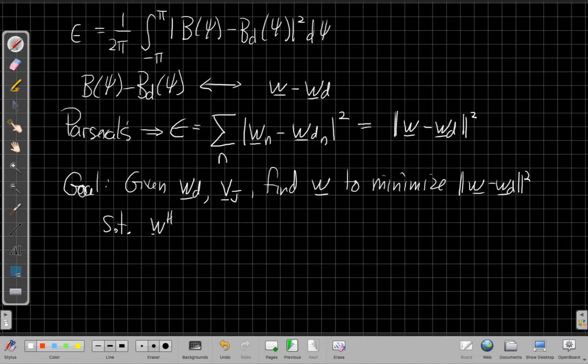With the constraint that the new weight vector W Hermitian needs to be orthogonal to V sub J. What I really want is the beam pattern to be zero, which says this mathematically, which implies that the new weight vector is perpendicular to the jamming direction. So how do I find the vector that is orthogonal to the jamming direction and minimizes its difference?